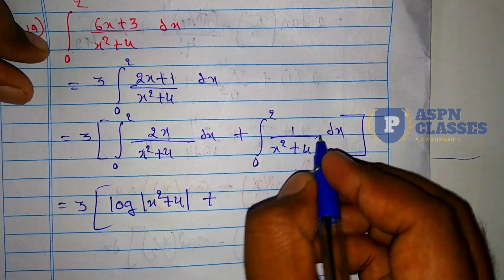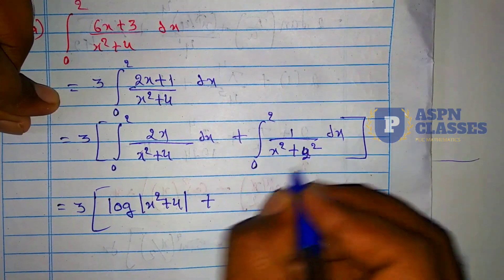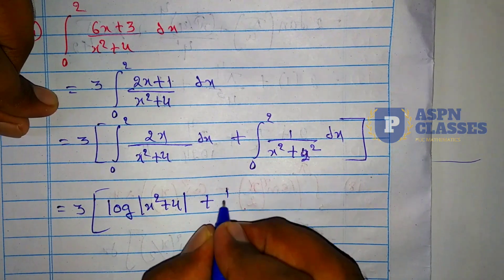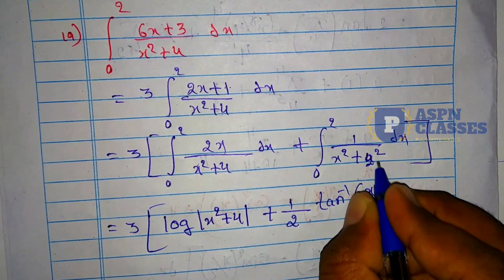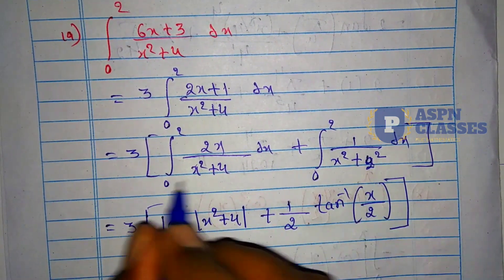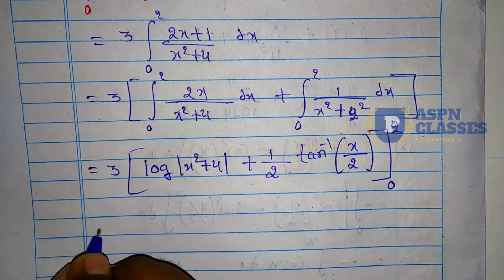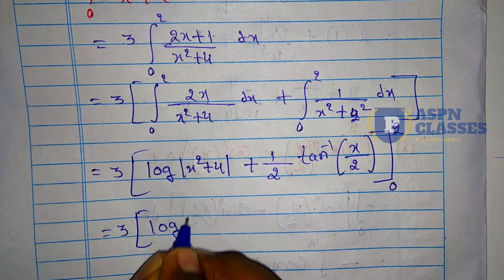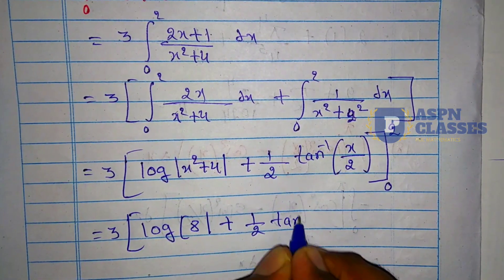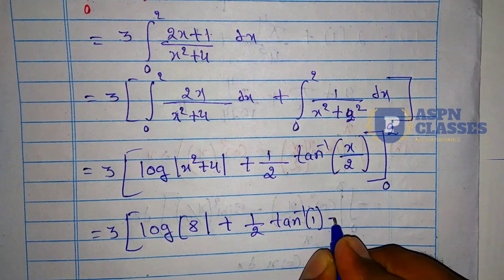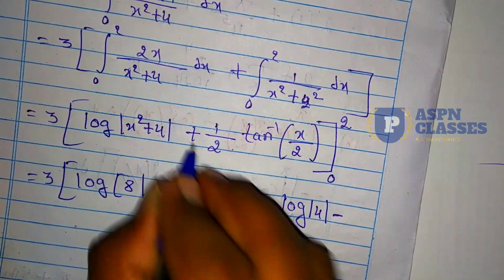So the result is 3 times [log|x²+4| + (1/2)·tan⁻¹(x/2)] with limit 0 to 2. Now we apply the upper limit x=2: log|4+4| + (1/2)·tan⁻¹(2/2) = log 8 + (1/2)·tan⁻¹(1). Then we apply lower limit x=0: log|0+4| + (1/2)·tan⁻¹(0) = log 4 + 0.